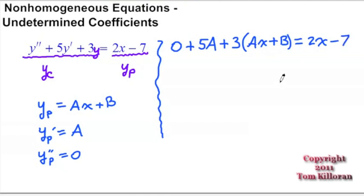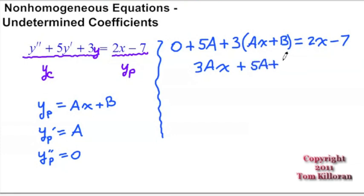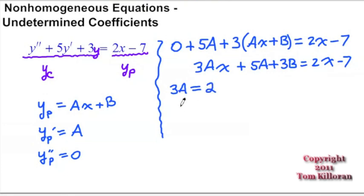We're going to use one of those neat little properties of polynomials: if you have a polynomial on the left and a polynomial on the right and they're equal to each other, their coefficients also have to be equal. So grouping our variables, we get 3ax as the x variable, and the constant term is 5a plus 3b, and this equals 2x minus 7. This gives us two equations — the coefficient of x: 3a must equal 2, so right off the bat we get a is equal to 2/3.